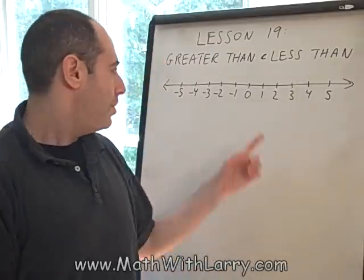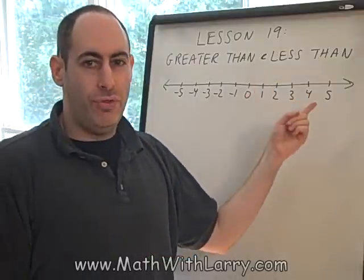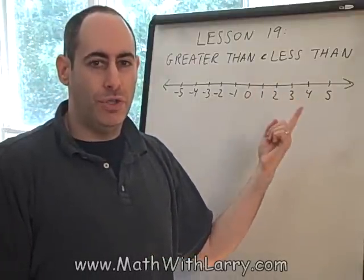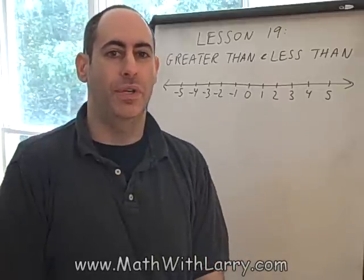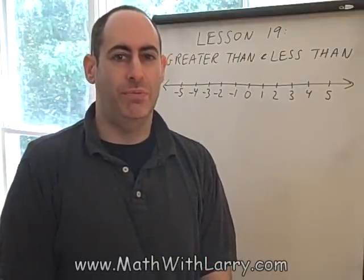The way it works is that on a number line, a number that's to the right will always be larger than a number that's on the left of the two numbers being compared. Let's take a look at a simple example to start with.